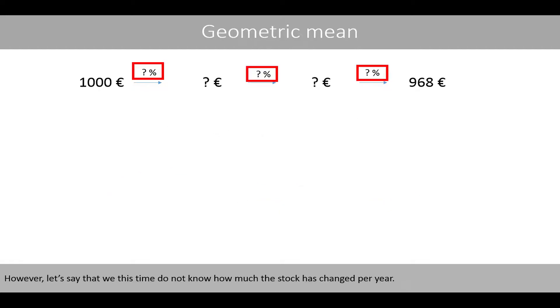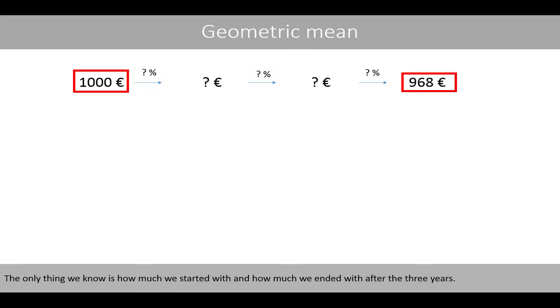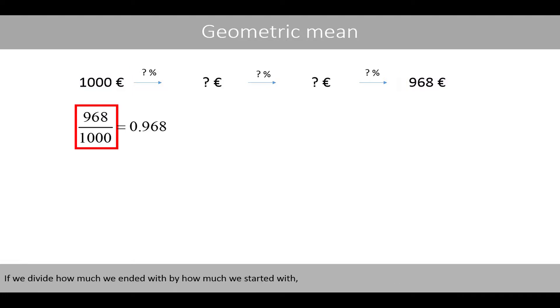However, let's say that we this time do not know how much the stock has changed per year. The only thing that we know is how much we started with and how much we ended with after the three years. If we divide how much we ended with by how much we started with, we see that the stock has declined with a factor of 0.968 or 3.2% over the three years.